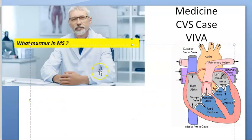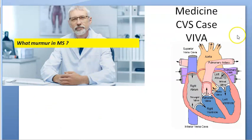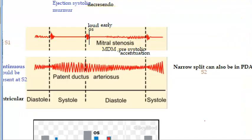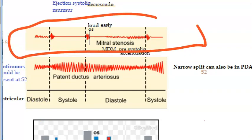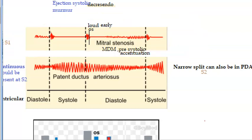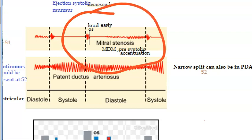What murmur comes in mitral stenosis? In mitral stenosis we get a diastolic murmur — a mid-diastolic murmur with presystolic accentuation.